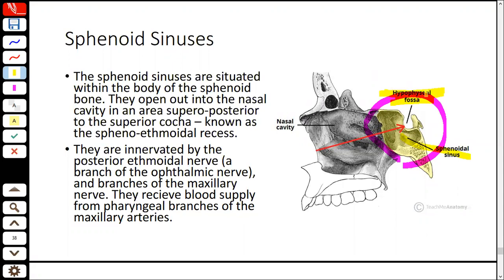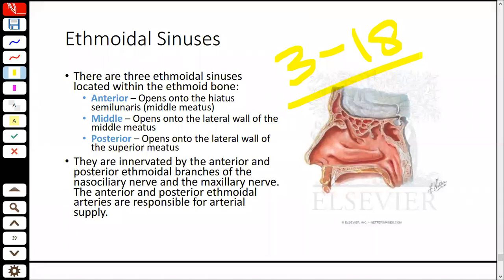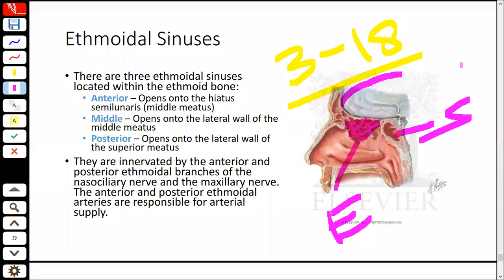The ethmoidal sinuses consist of 3 groups containing 3 to 18 air cells. There are anterior, middle, and posterior groups. The anterior and middle groups drain into the middle meatus, while the posterior group drains into the superior meatus. Innervation is from anterior and posterior ethmoidal branches, nasopalatine and maxillary nerves.